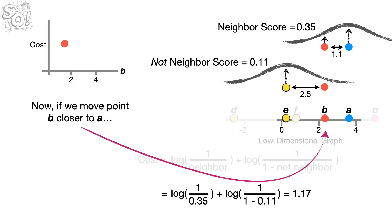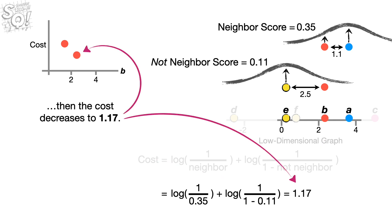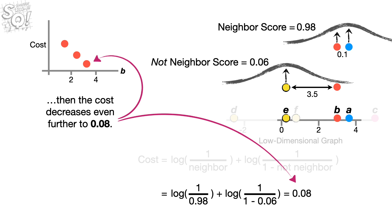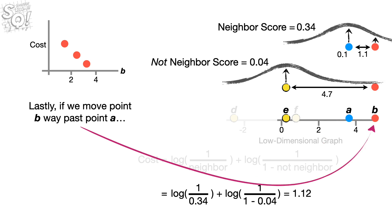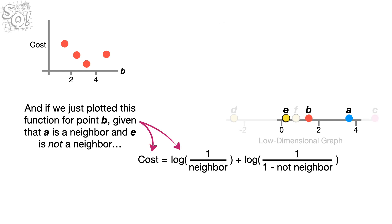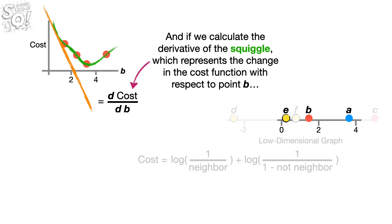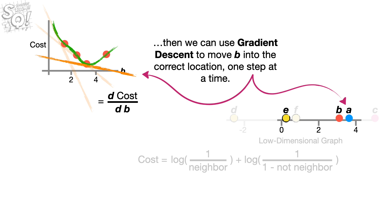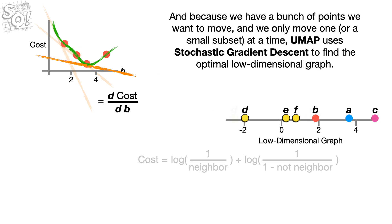If we move point B closer to A, then the cost decreases to 1.17. And if we move point B even closer to A, then the cost decreases even further to 0.08. Lastly, if we move point B way past point A, then we see the cost start to increase. And if we just plotted this function for point B, given that A is a neighbor and E is not a neighbor, then we would get this squiggle. And if we calculate the derivative of the squiggle, which represents the change in the cost function with respect to point B, then we can use gradient descent to move B into the correct location one step at a time. And because we have a bunch of points we want to move and we only move one or a small subset at a time, UMAP uses stochastic gradient descent to find the optimal low-dimensional graph.